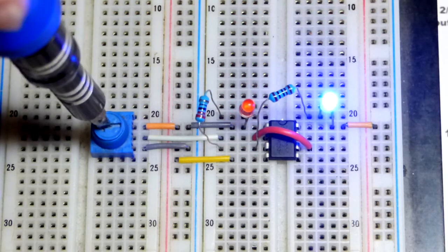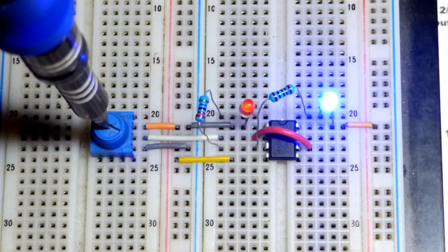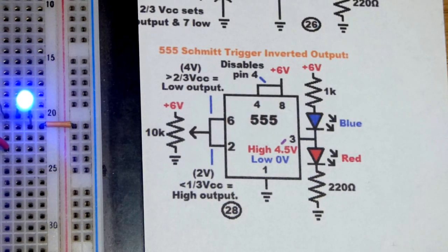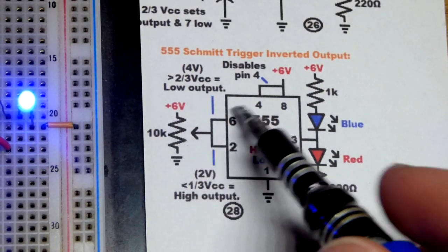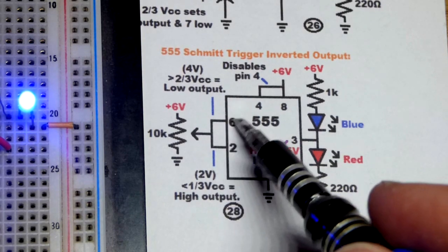It could be either high or low. You have to go to one extreme or the other to switch it. These inputs don't take any current.